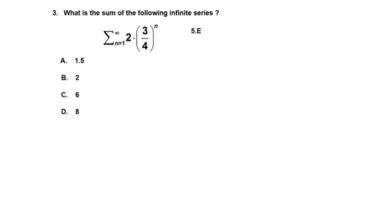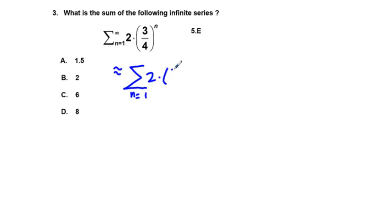Problem 3: Find the sum of the following infinite series. One approach is to approximate by summing from n equals one to a large number like fifty, using the summation of two times three-fourths to the power of n. We can't put infinity in our calculator so we use a high number like fifty or one hundred.